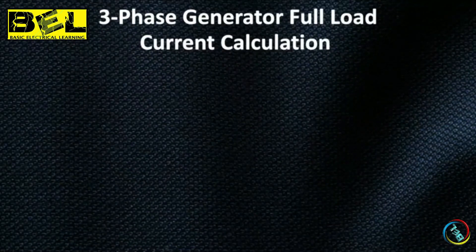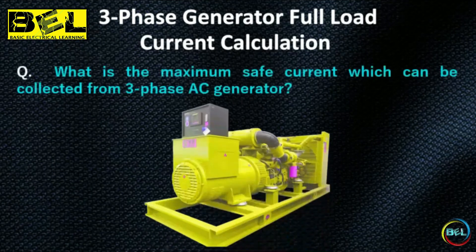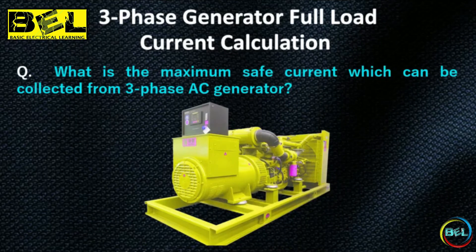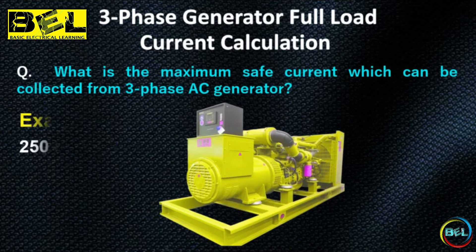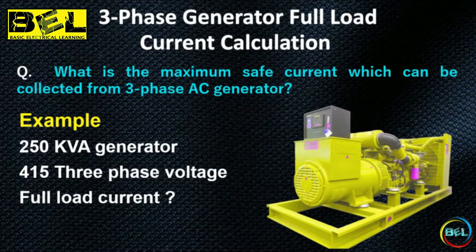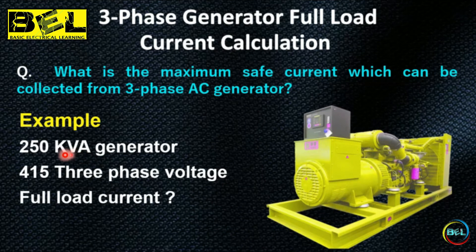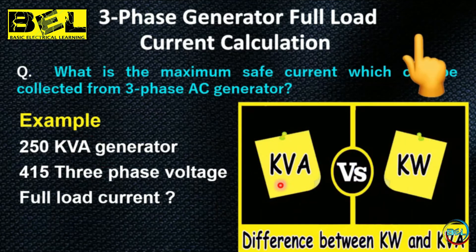The question is: what is the maximum safe current which can be collected from a three-phase AC generator? For example, we have a 250 kVA generator having a voltage of 415V three-phase AC, and we have to find out the full load current. Note that the power of all AC sources is rated in kVA — kilovolt-ampere — and there is a difference between kVA and kilowatt.